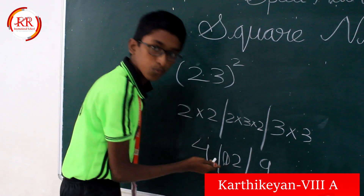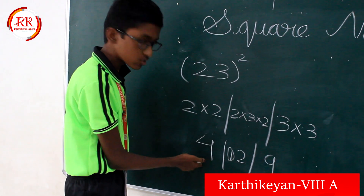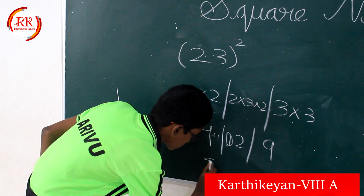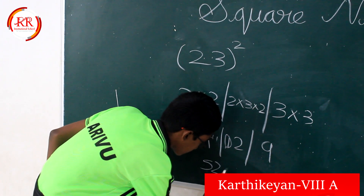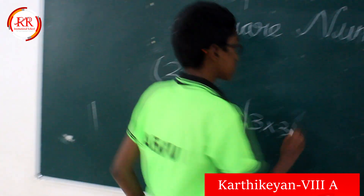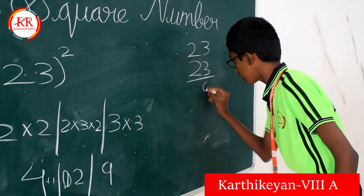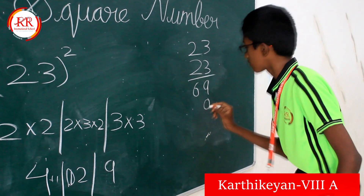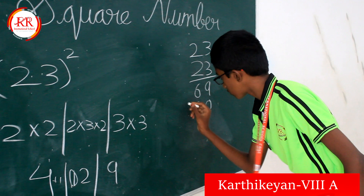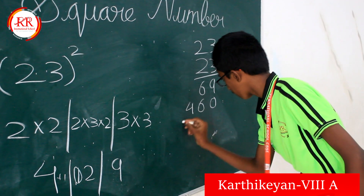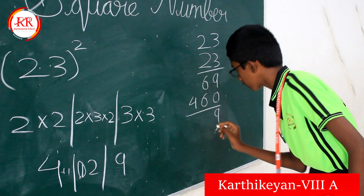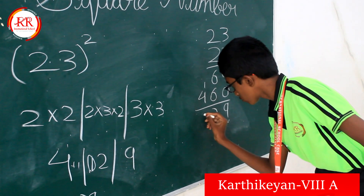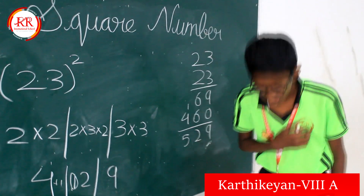3 threes are 9. So 1 is the carry over. We have to add this — so 4 plus 1 is 5. So we can check: 3 threes are 9. The answer is correct. Thank you.